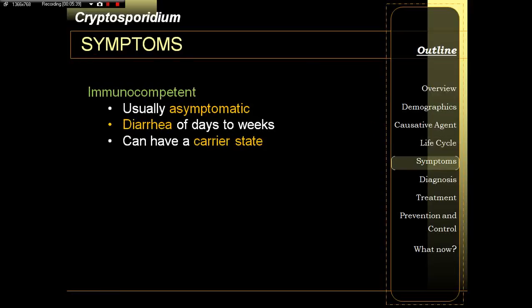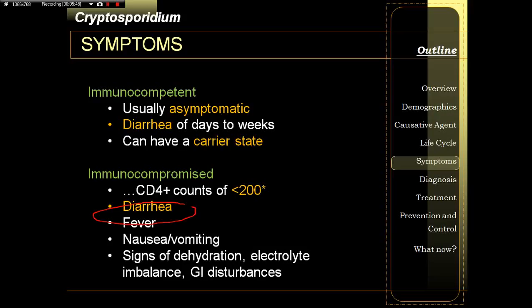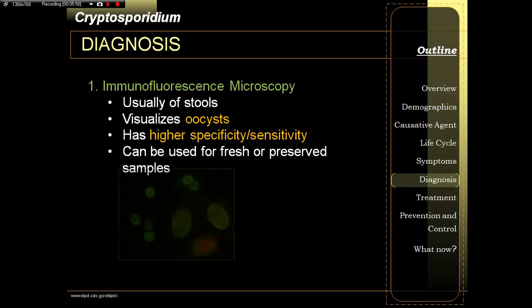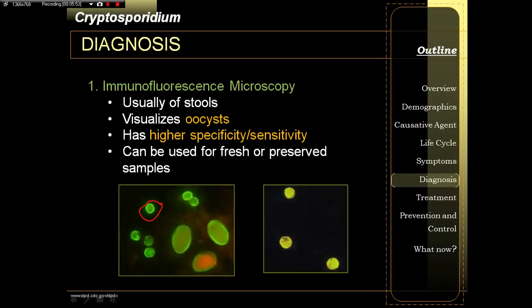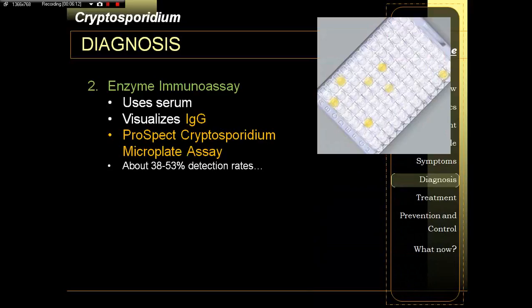Symptoms are usually asymptomatic, sometimes diarrhea, but in immunocompromised patients, intractable diarrhea is the usual symptom. Diagnosis is through microscopy — you look for the circular cysts using specific stains, which are highly fluorescent. You can also use enzyme immunoassays, especially in the field during epidemics, to detect positive results in population groups.